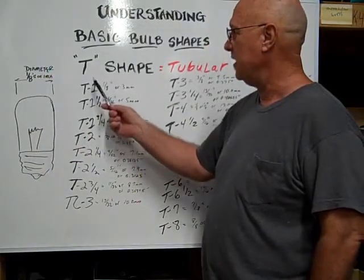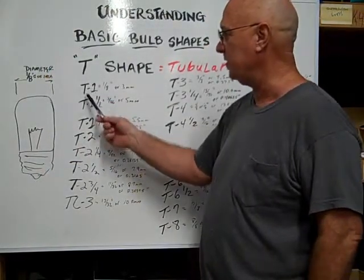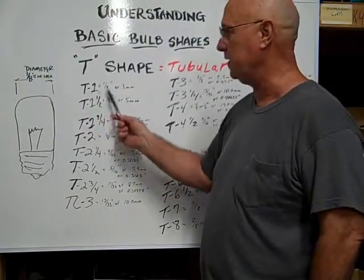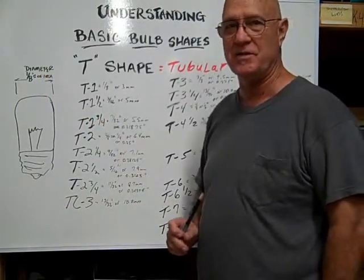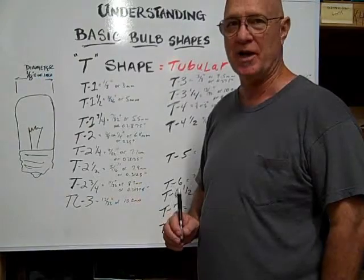So if you have a bulb that has a T in front of a number, the T stands for tubular shape, and the number after it is the number of eighths of inches in diameter of the glass envelope.